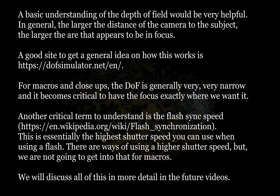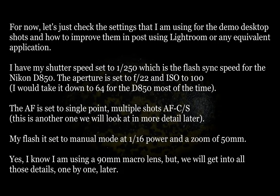We will discuss all of this in more detail in future videos. For now, let's look at the settings I am going to use for these demonstration desktop shots, and a brief look at how to improve them in post using Lightroom or any equivalent application. I have my shutter speed set to 1/250th of a second, which is the flash sync speed for the Nikon D850. The aperture is set to F22 and ISO 200. Generally this would be the base ISO, which is 64 for the D850, but I will go with 100 for now.